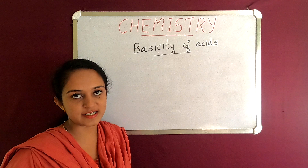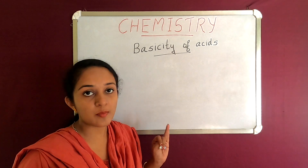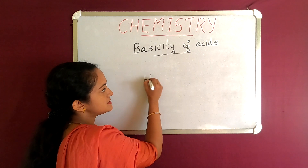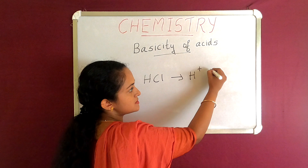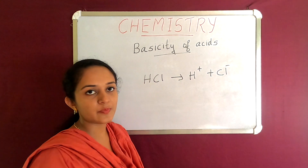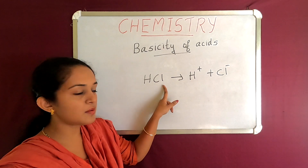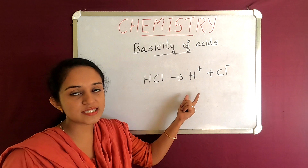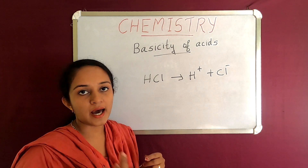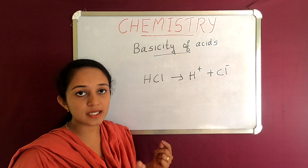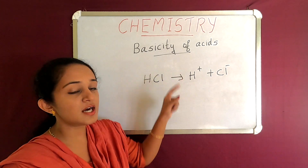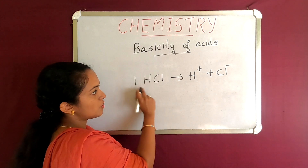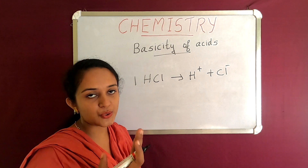Next, the basicity of acids. That is determined by the number of H⁺ ions. For HCl, we have H⁺ plus Cl⁻. One hydrogen ion is donated per one molecule of hydrochloric acid. Basicity means how many hydrogen ions one molecule of the acid donates. One molecule of hydrochloric acid donates one hydrogen ion, so it is called a monobasic acid.